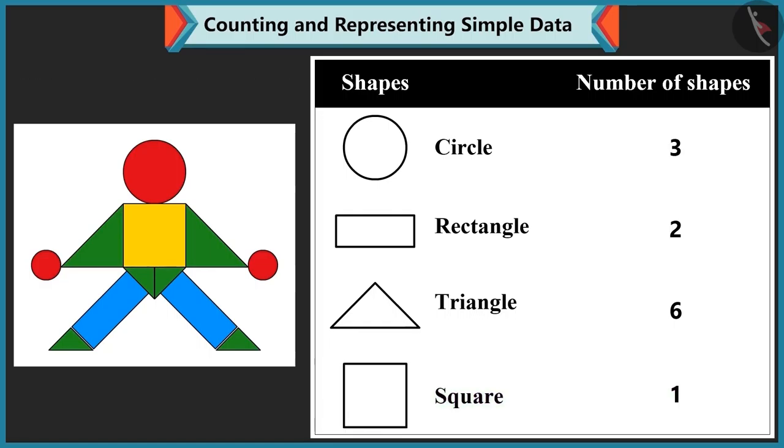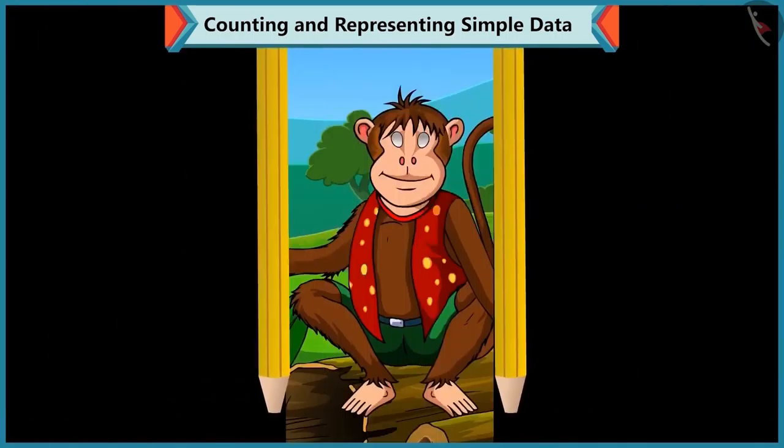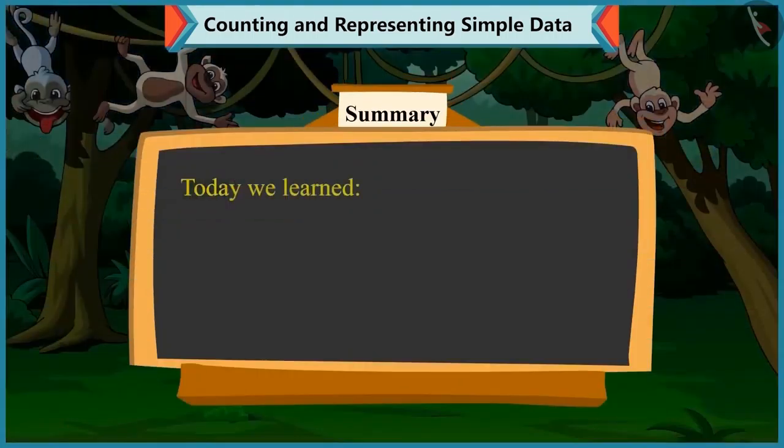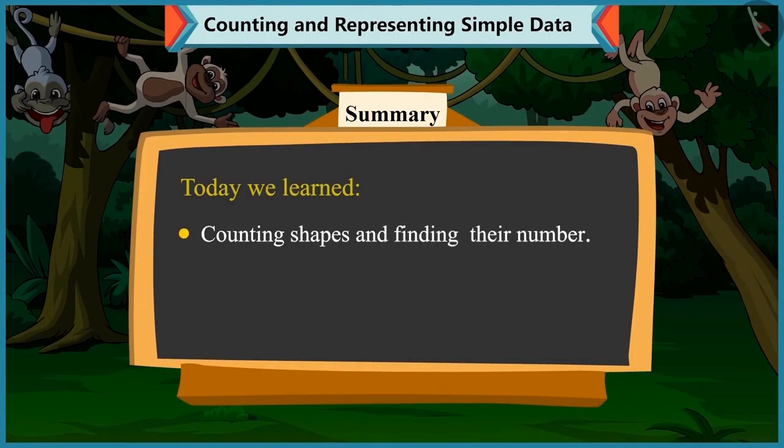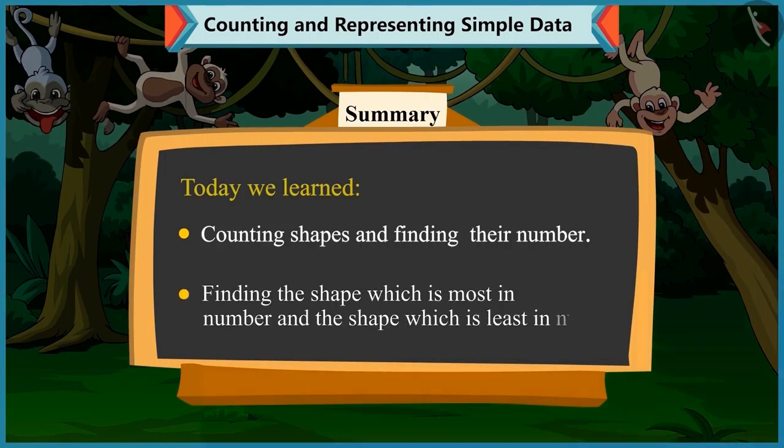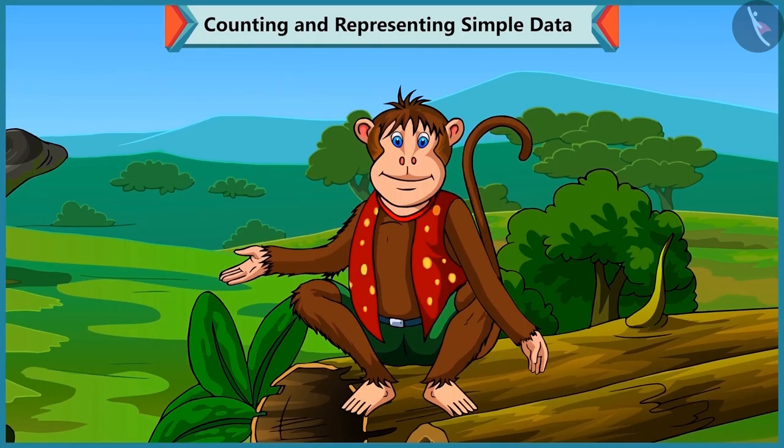Perfect, Bubbly. Children, today we saw how Bubbly counted the shapes and found the number of each shape. She also learnt which shape is most in number and which is least in number. In the next video, we will see some interesting examples of counting objects and representing them in numbers.